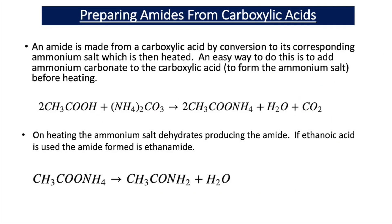We've seen how primary amines and acid chlorides react to form substituted amides. To make a conventional amide directly from a carboxylic acid, you add ammonium carbonate to the carboxylic acid and heat it. Adding ammonium carbonate to the carboxylic acid makes an ammonium salt, and when that ammonium salt is heated it dehydrates to produce an amide and water.